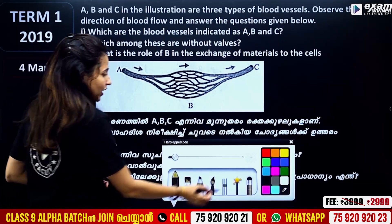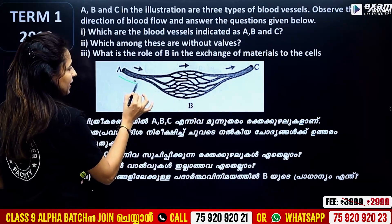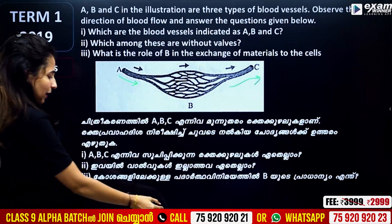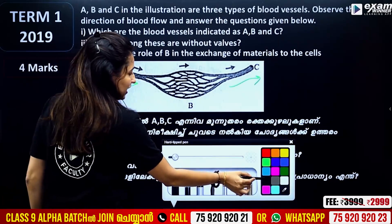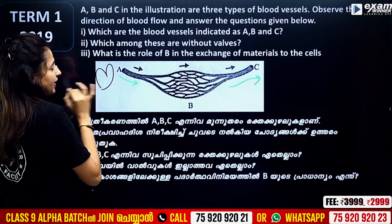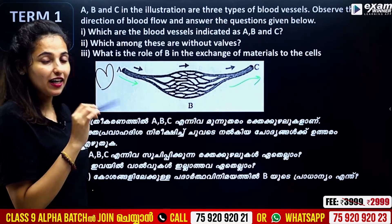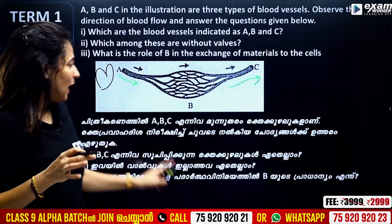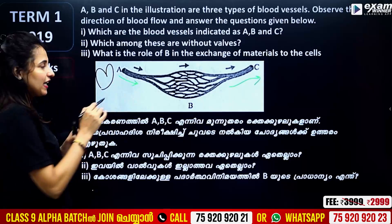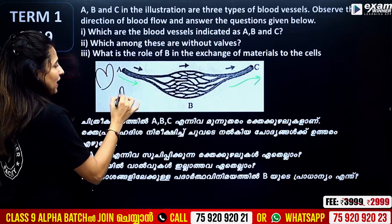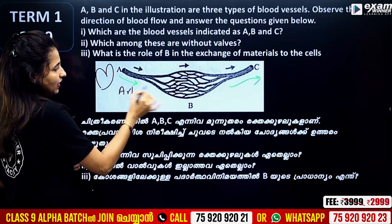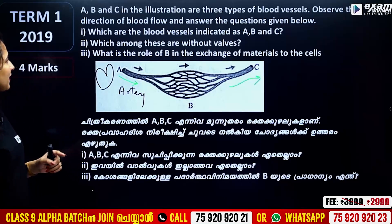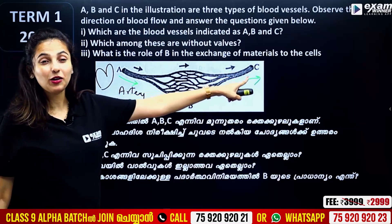Blood flow direction is like this. A is the artery. If we take the tissues, we can look at the tissues inside. B is the capillaries, and C is the vein.